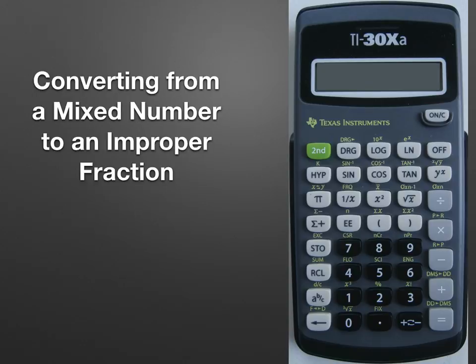To convert a mixed number to an improper fraction, we first enter the mixed number 3abc1abc4. That's 3 and 1/4.